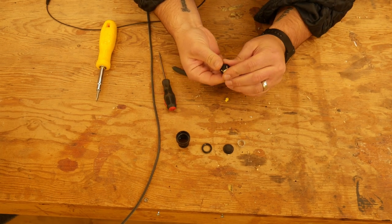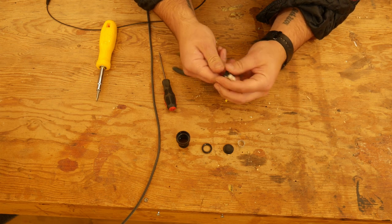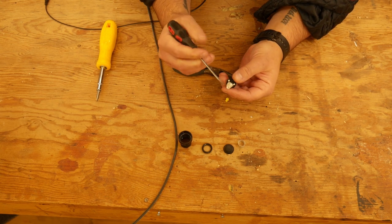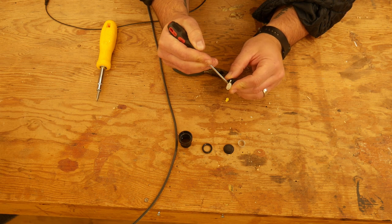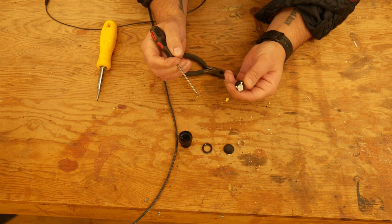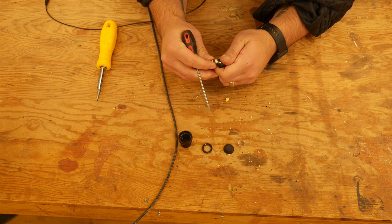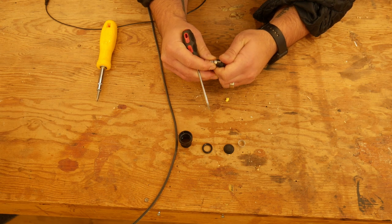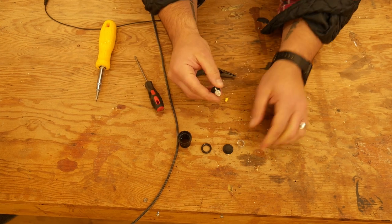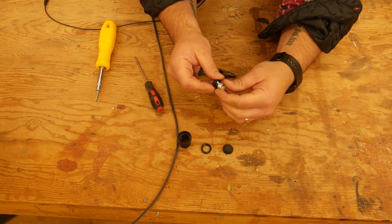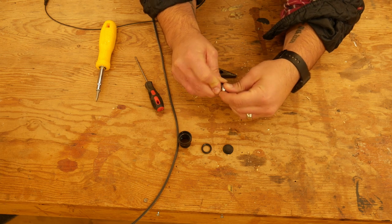Sometimes you just got to thread this thing on and try to kind of turn it. This can be a little bit tricky. There we go. Just make sure that spring is fully around that metal piece.